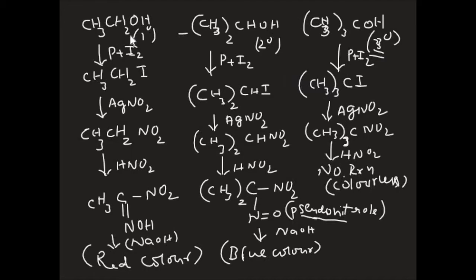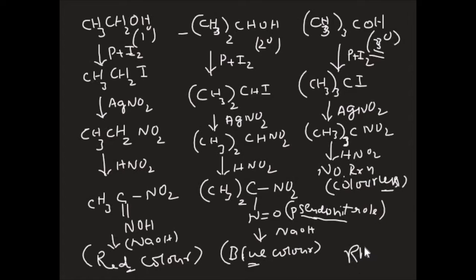So the Victor Meyer test gives: primary alcohol gives red color, secondary alcohol gives blue color, and tertiary alcohol gives no color indication. That is why we call this the RBW test — R for red, B for blue, and W for white.